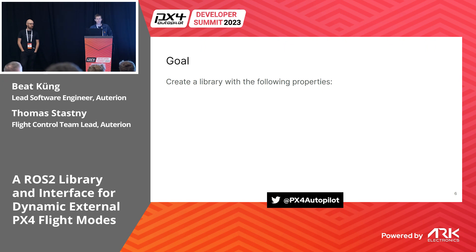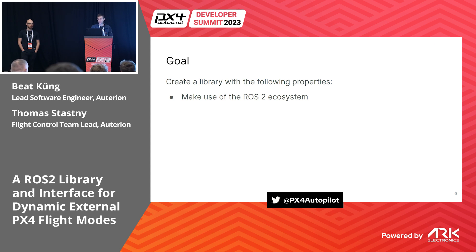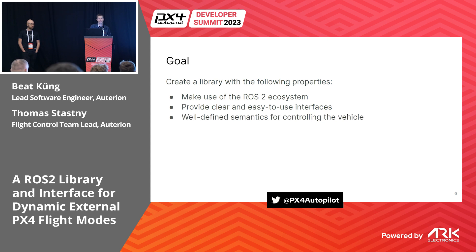Our goal was to create a library with the following properties. We wanted to make use of the ROS ecosystem because that provides us with a lot of existing high-level functionality like trajectory or avoidance libraries. We wanted to provide clear and easy-to-use interfaces with well-defined semantics for controlling the vehicle — this includes which setpoint types are supported, how to use them, and which effect they have on the vehicle, as well as who is in charge of controlling the drone.